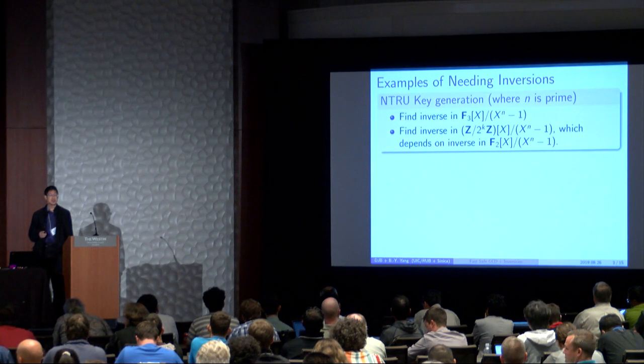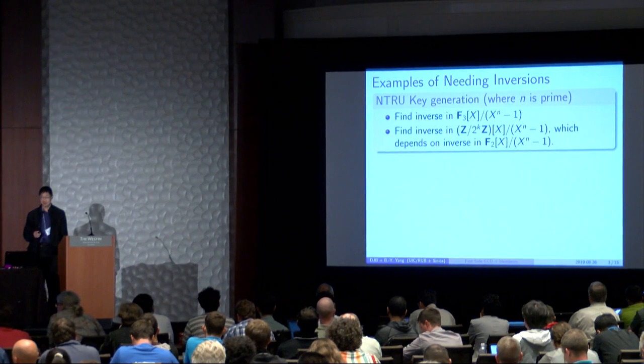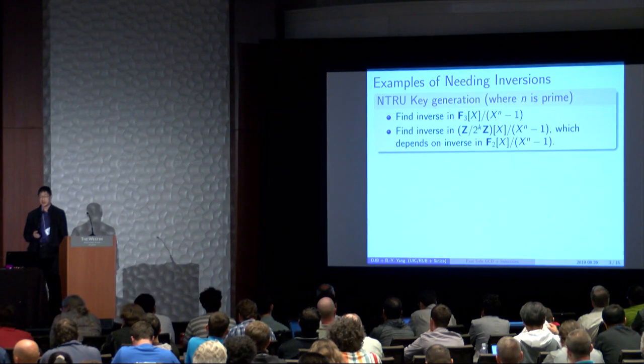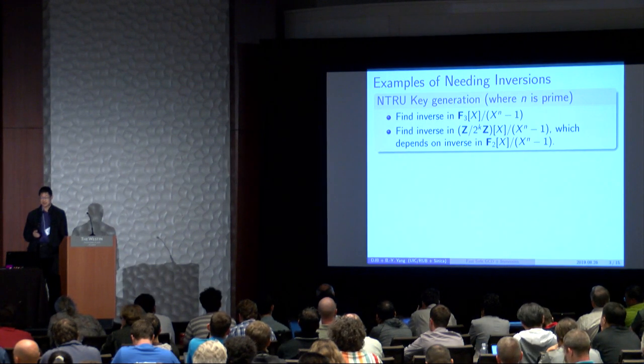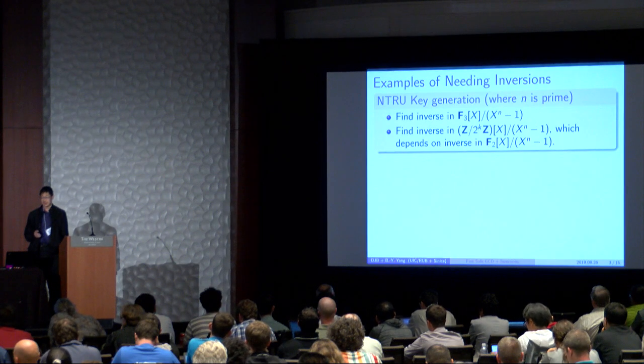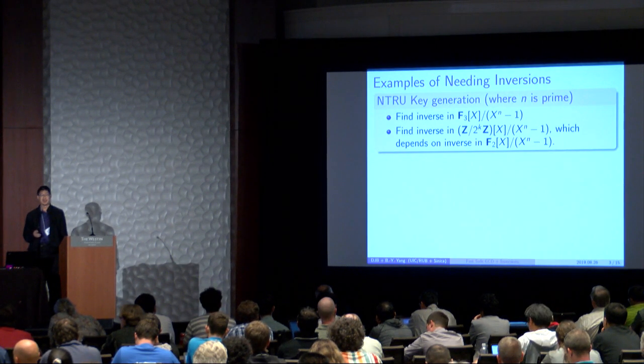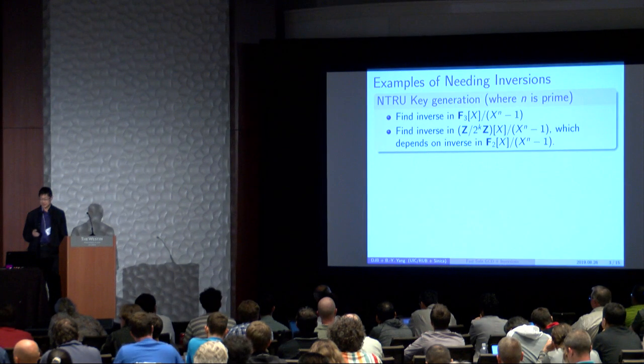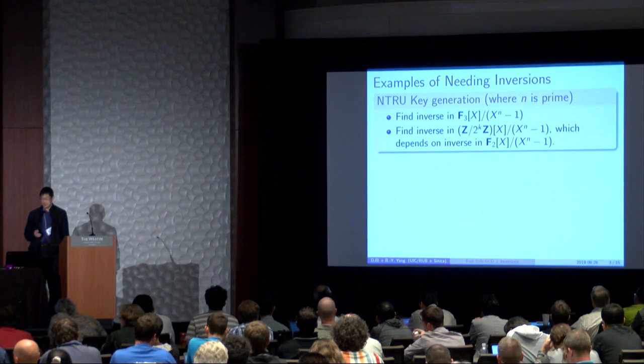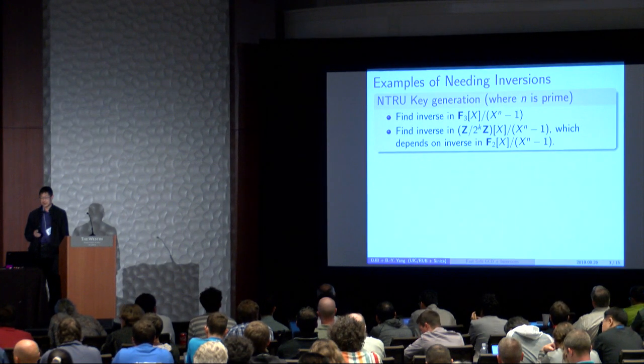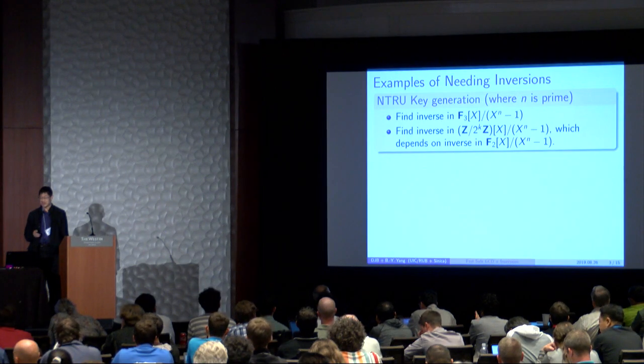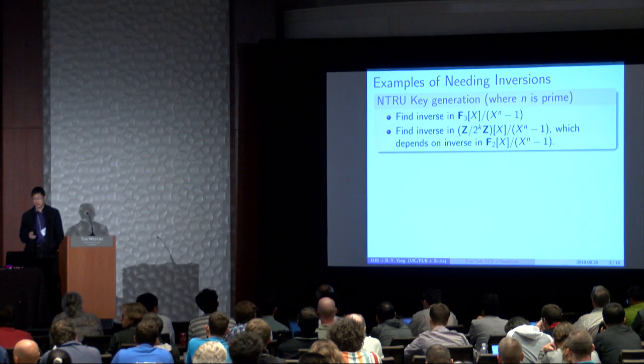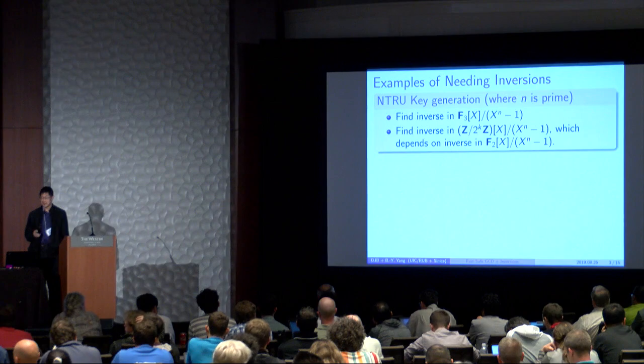So there are some examples of modern cryptography that needs inversions. There is the NTRU key generation, where we need to find the inverse in F3 of x over x to the n minus 1. For HRSS, that's the cyclotomic polynomial. We also need to find the inverse in z over 2 to the k z of x over x to the n minus 1, which depends on another inversion in F2 of x over x to the n minus 1.